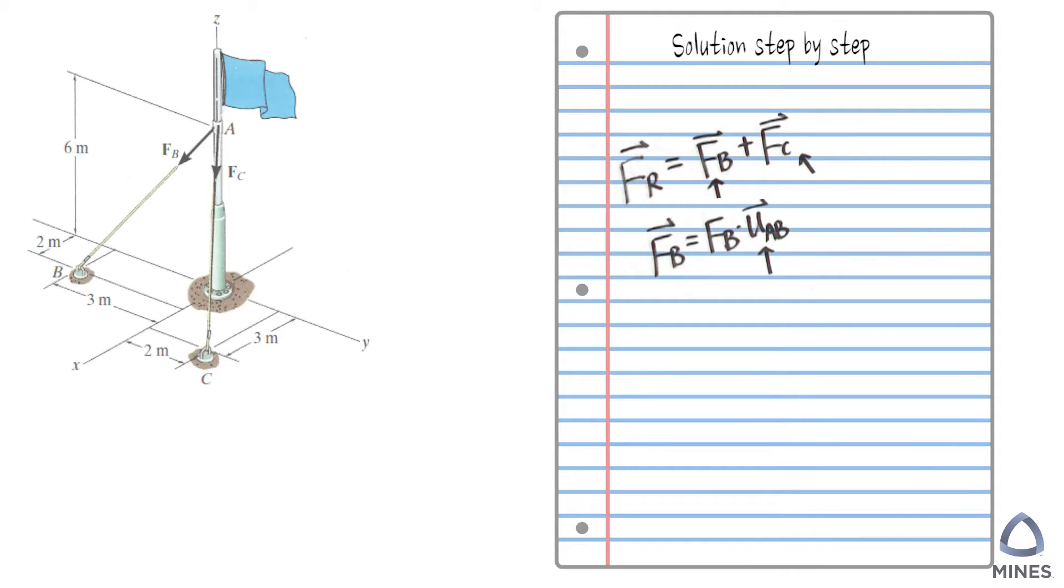You can see FB is in the line of AB, so it will be the same thing here. The FC will be equal to its own magnitude multiplied by the unit vector of AC.